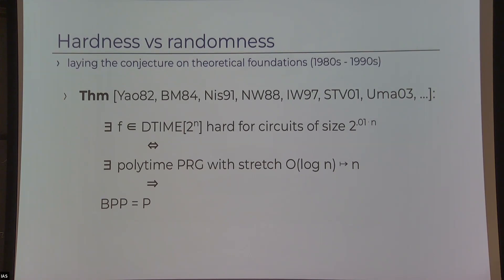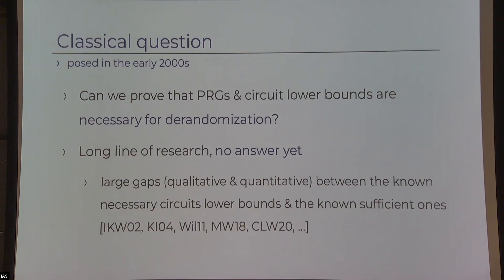This is a classical answer, and as a consequence of these PRGs we get BPP equals P. A natural question introduced in the early 2000s is: do we really need PRGs for de-randomization? This is a very strong way to do de-randomization — one algorithm good for all — but there's a long line of research over two decades with no conclusive answer. There's a large gap, both quantitative and qualitative, between what we know is sufficient and what we know is necessary.